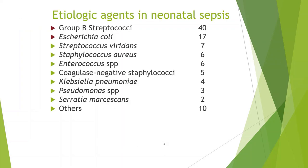In terms of etiologic agents, Group B Streptococcus is the bulk, especially in the developed world — about 40% according to some studies. Others include E. coli, Streptococcus viridans, Staphylococcus aureus, Enterococcus, CoNS, Klebsiella pneumoniae, Pseudomonas, Serratia, and others.